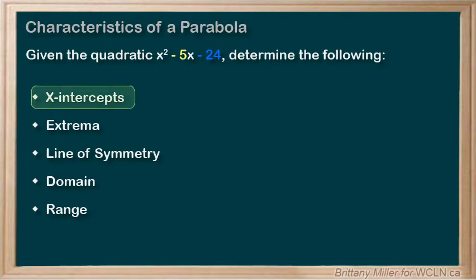The x-intercepts are the solutions to x squared minus 5x minus 24 equals 0. You could use factoring or the quadratic formula to find them. This equation will factor, so that's what I'm going to do.